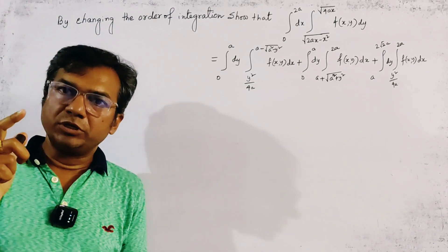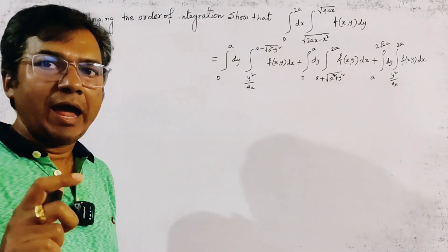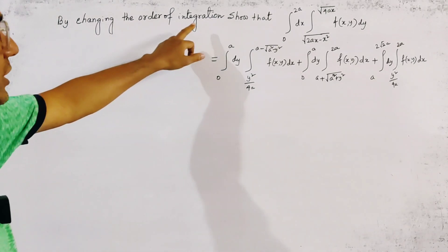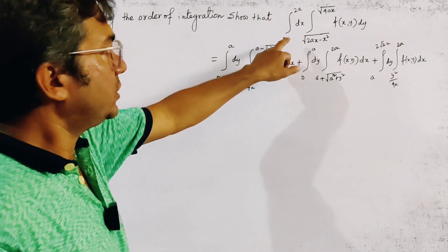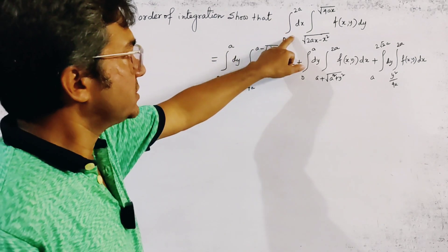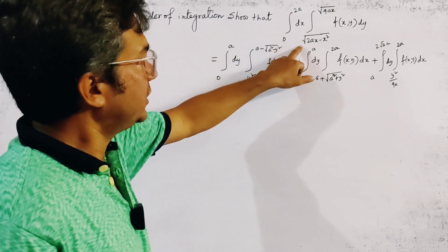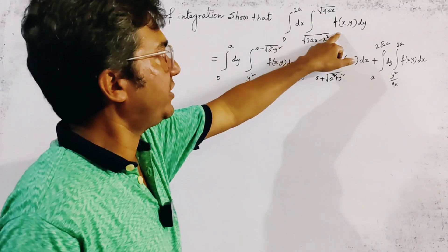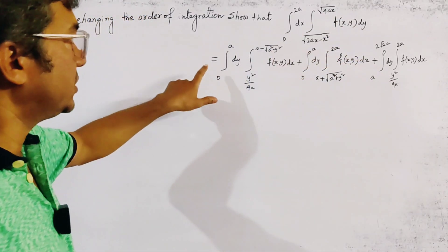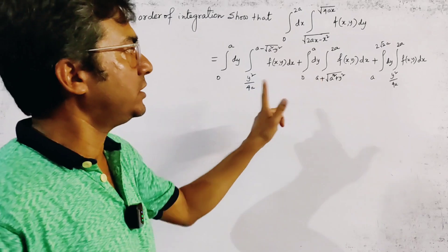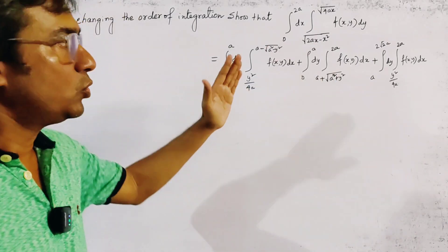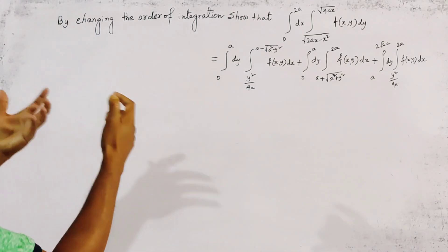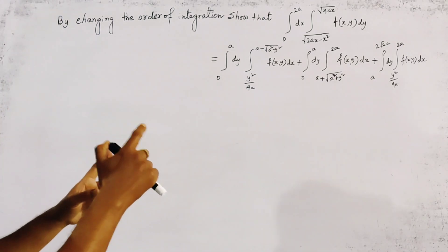Today's problem is from double integration. The problem is, by changing the order of integration: the integral from 0 to 2a dx, with the inner integral from √(2ax - x²) to √(4ax) of f(x,y) dy, which is given by the sum of 3 integrations. We have to prove this by changing the order of integration only.